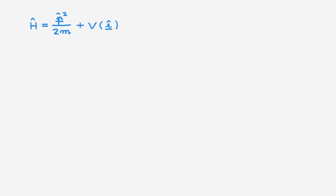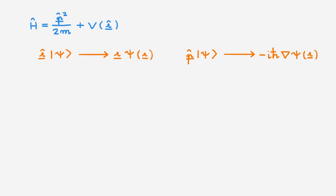The general Hamiltonian of a one-particle system has a kinetic energy term and a potential energy term. From the videos on the position representation, we know that the position operator acting on state psi acts as a multiplicative factor, and the momentum operator acts as a differential operator in the position representation. Using these results, we can rewrite the Hamiltonian with the kinetic energy term and the potential energy term. Due to the spherical symmetry of central potentials, it is most convenient to work in spherical coordinates. For the kinetic energy term, we essentially need to write the Laplacian in spherical coordinates.